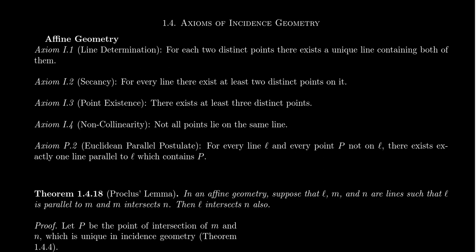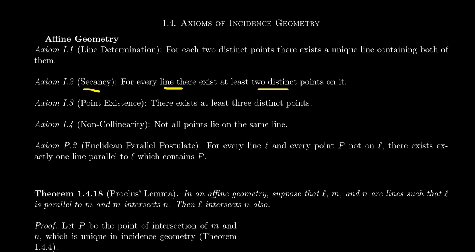To be an incidence geometry, you satisfy the four axioms of incidence. We have line determination, which means for any pair of points, there exists a unique line determined by that pair. Secancy guarantees that every line has at least two distinct points on it.